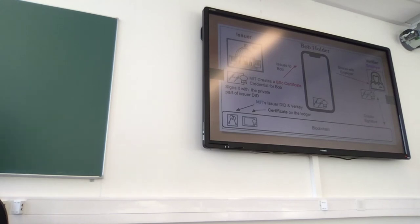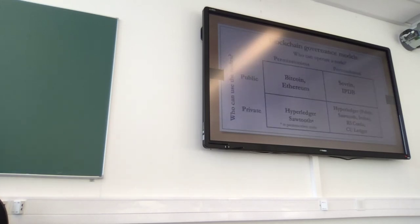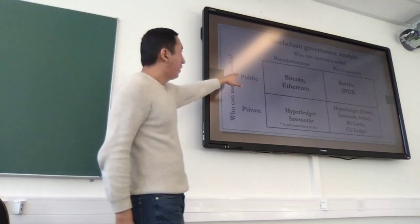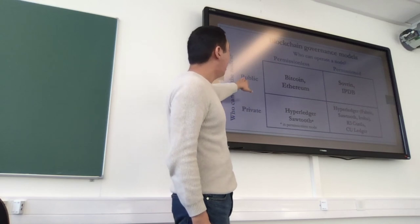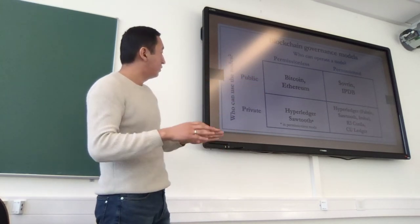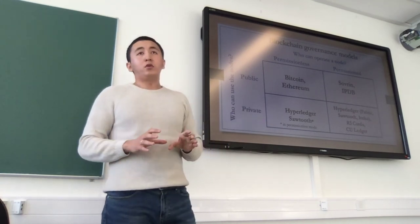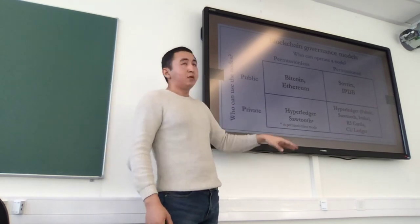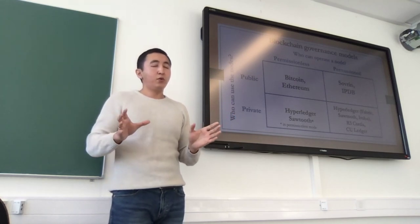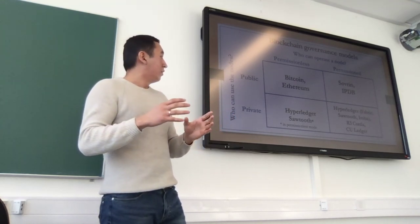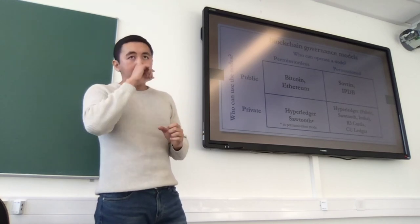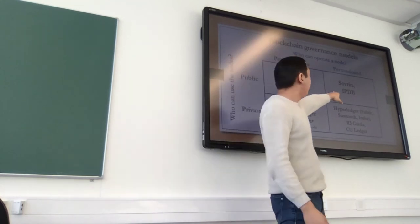What kind of blockchain can we use? We have Bitcoin and Ethereum, which are the largest public networks — anyone can read and write to the ledger. There are also private blockchains like Hyperledger, which is more for enterprises where only certain organizations can see and write to the blockchain. And there is Sovrin, which is specifically for identity — it uses a public but permissioned blockchain, meaning anyone can see it but only verified organizations can write to it.